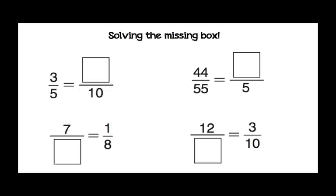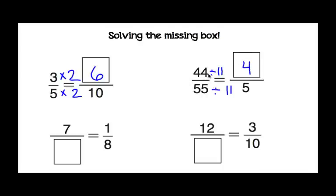In your journal pages, you're going to see a lot of problems like this, where there's an empty box and you need to solve what would go into it. So for these equivalent fractions, think about what did they multiply 5 by to get to 10? 5 times 2 is 10, and whatever we do to the denominator, we have to do to the numerator. So 3 times 2 is 6. The equivalent fraction for 3/5 is 6/10. For the next one, how did they get from 55 to 5? This time they used the division rule — they divided by 11. 55 divided by 11 is 5. Whatever we do to the denominator, we do to the numerator: 44 divided by 11 is 4. So the equivalent fraction for 44/55 is 4/5.